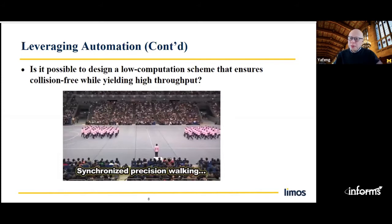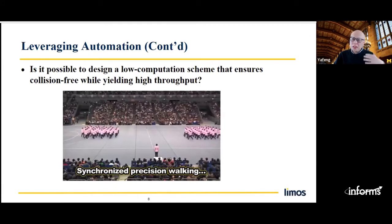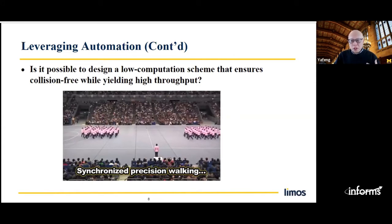When two groups of people cross, there are so many conflict points, but people actually manage to go through without stopping and without collisions. The synchronized process control and precision control does the trick — if you design the formation properly and the pace properly, what people need to do is follow them to go through those conflict points without collision and without slowing down. There's no real-time optimization, but you can achieve high throughput. If you apply this idea to intersection control, because if people can do it, automated vehicles can do it too in a fully automated vehicle environment.